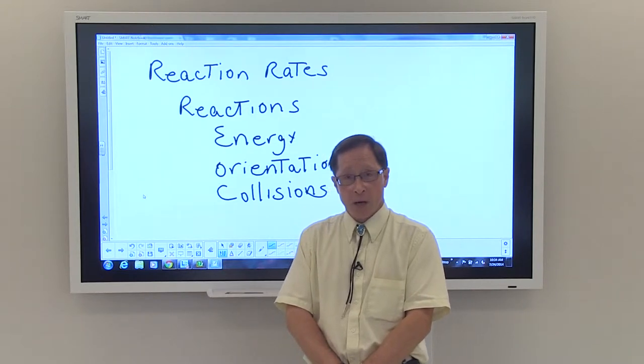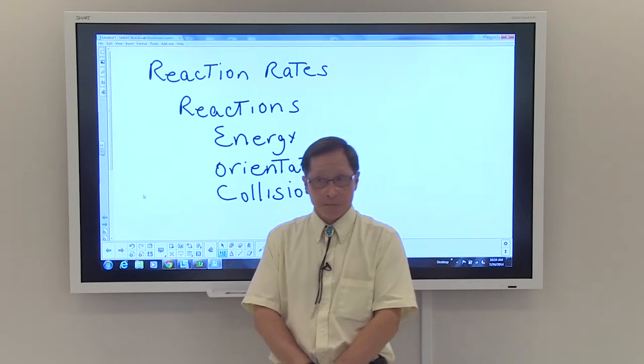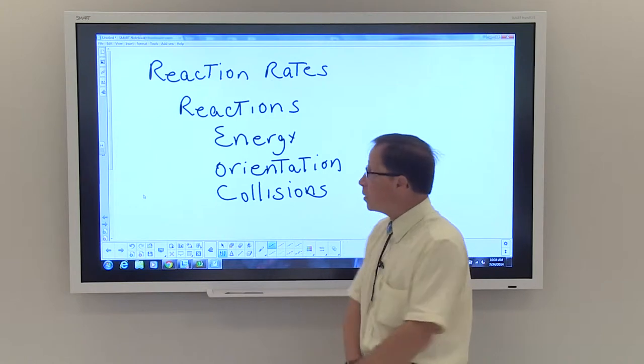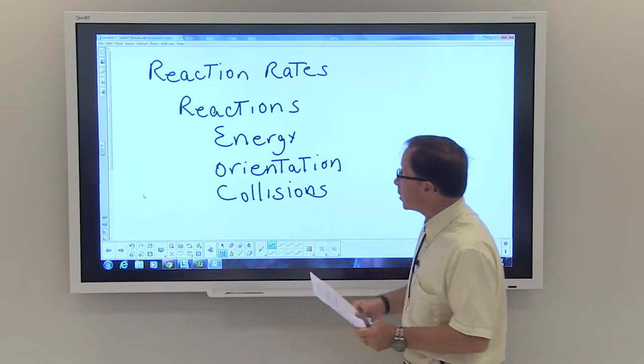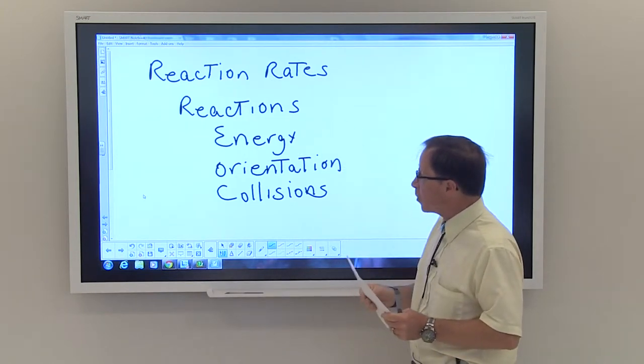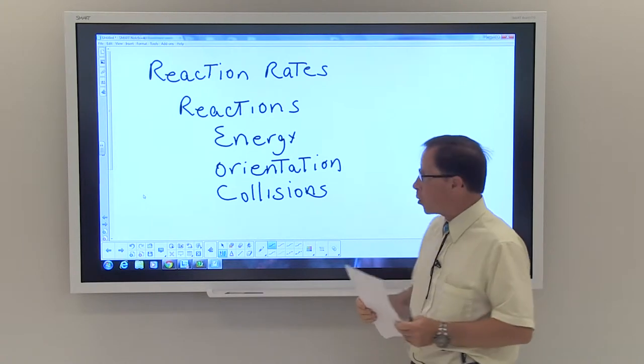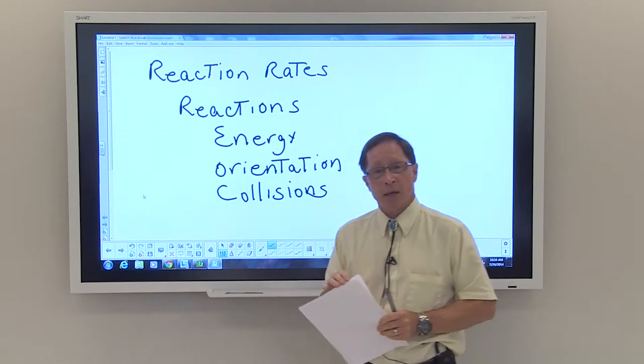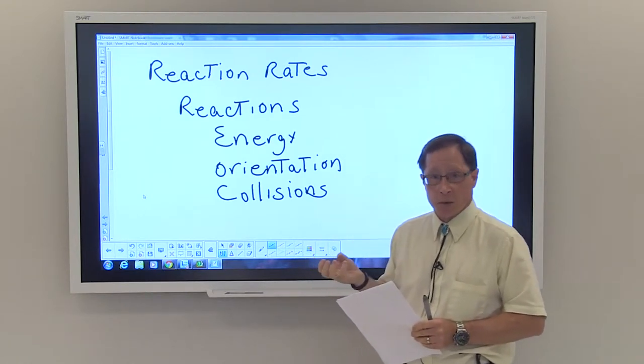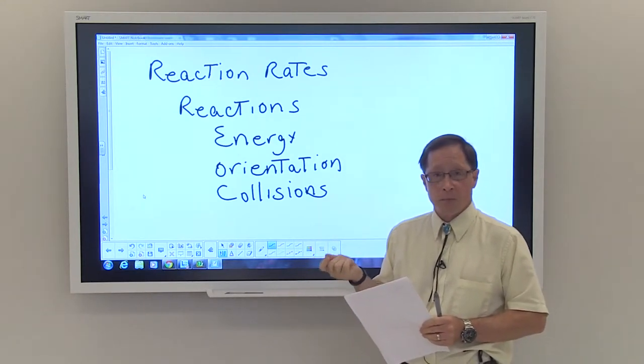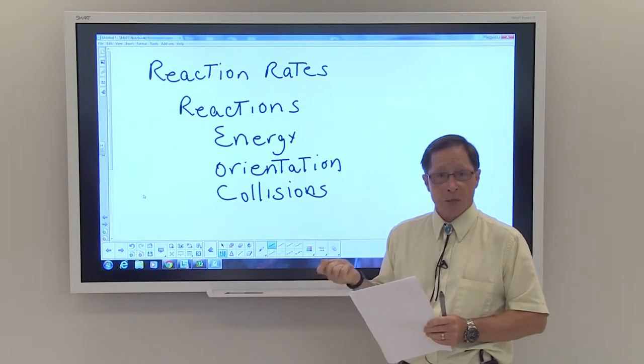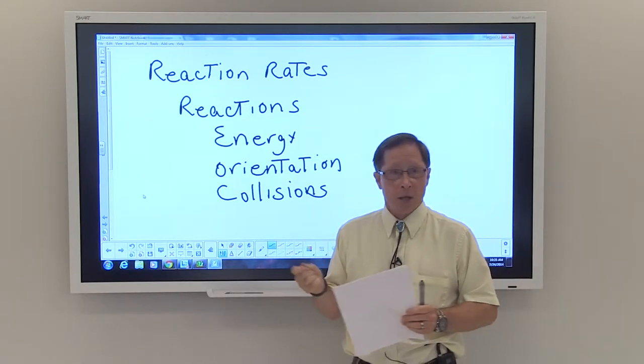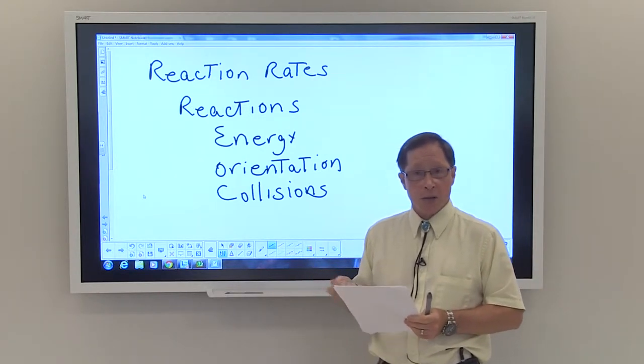Before you can evaluate a reaction rate, you have to have a reaction. On the board, I have a few things that will help us determine whether or not a reaction is going to occur. The first is energy. A reaction has to have a certain amount of energy. The energy of the reactants has to be sufficient when they come together to cause this reaction to occur.